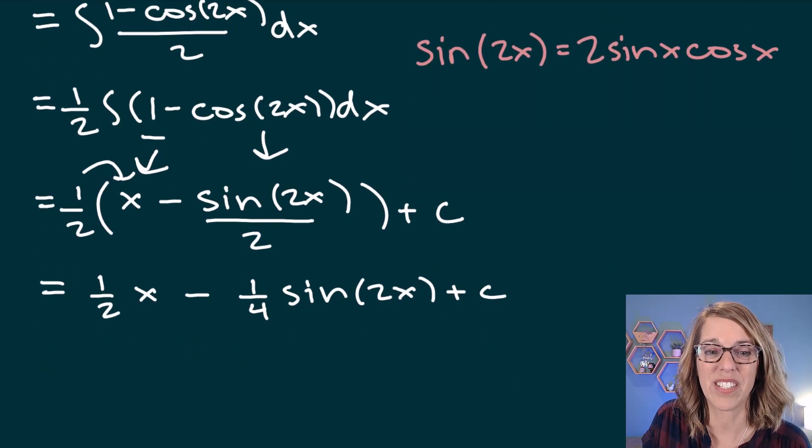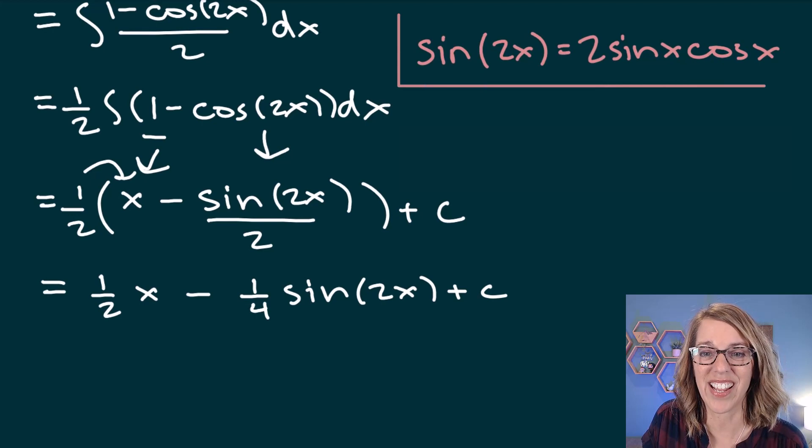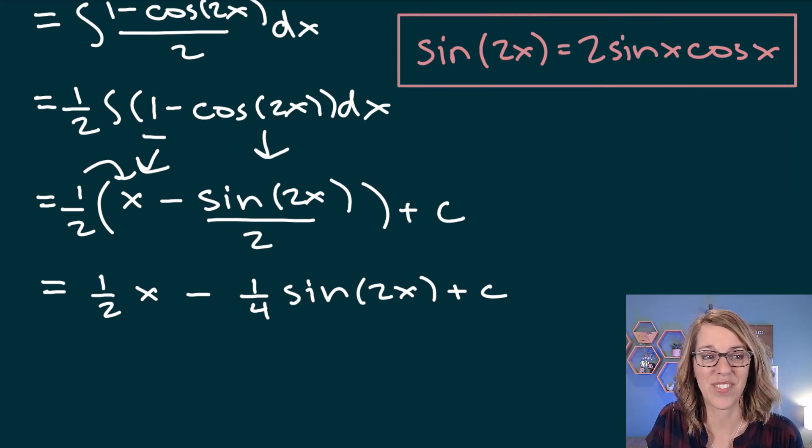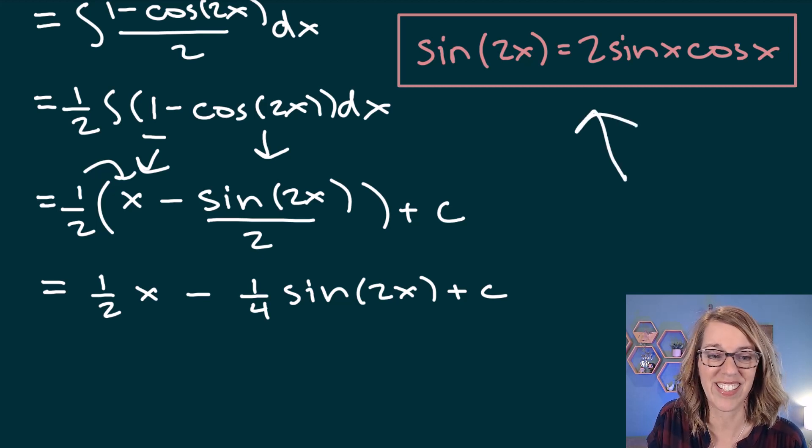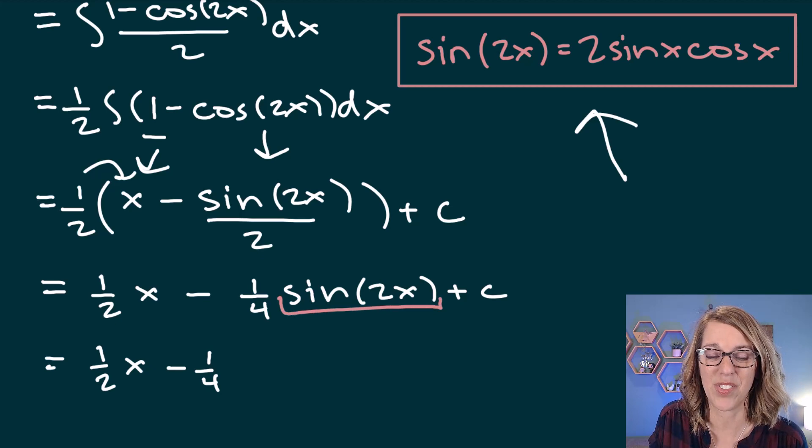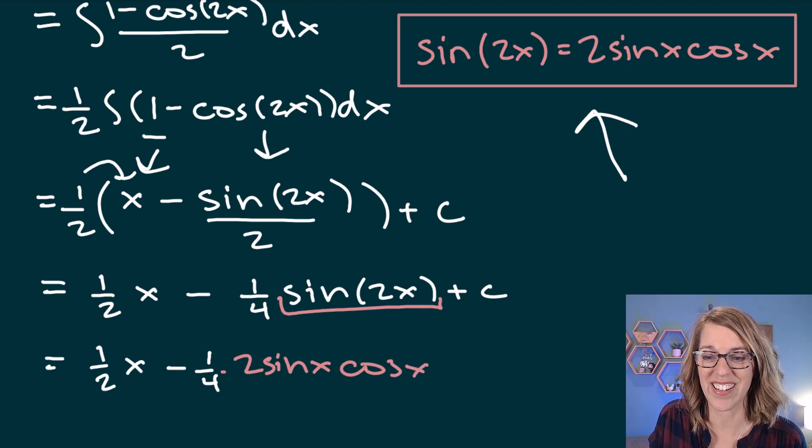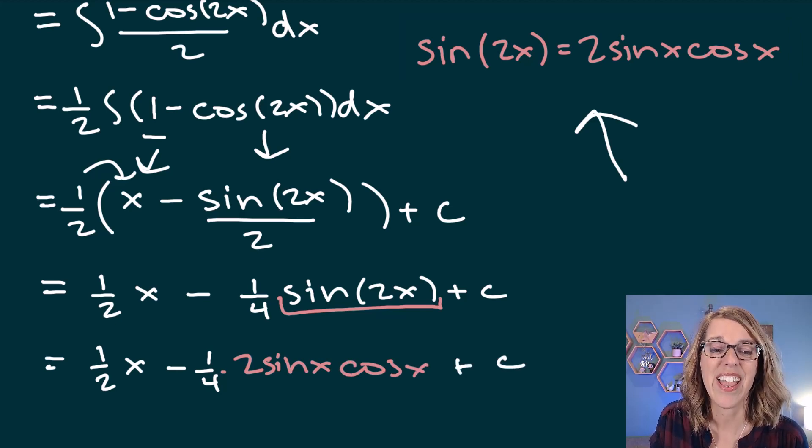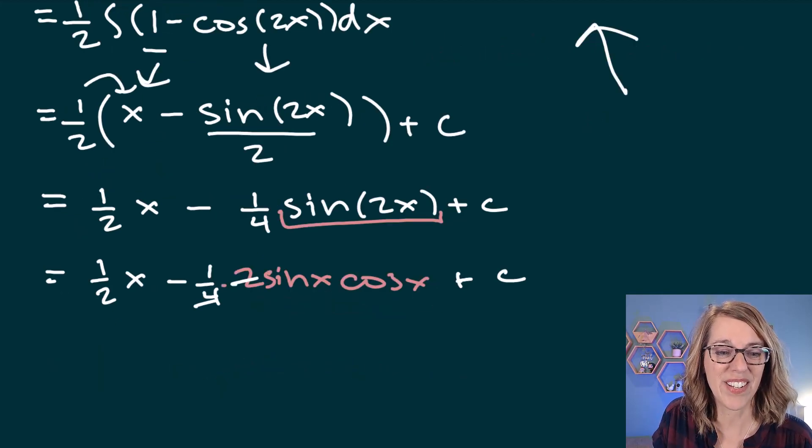There's one more version of the solution, and it uses that second identity for the sine of 2x. If I go ahead and apply that, so if I apply the second identity, I'm going to leave the 1 half x. I get 1 fourth, and I'm going to go ahead and replace my sine of 2x with 2 sine x cosine x. Of course, there's a plus c on the outside.